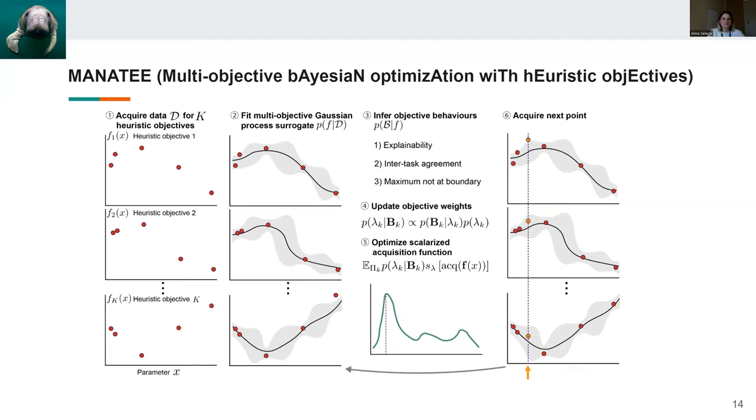And in step five, we optimize the scalarized acquisition function in the expectation under the distribution over the scalarization weights, which is conditioned on the set of desirable behaviors. And so the maximum of this optimization procedure gives us the location where we should sample our objectives next.